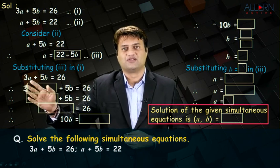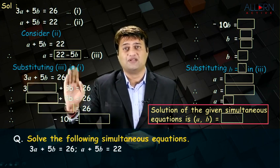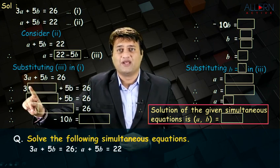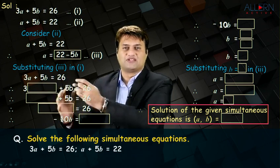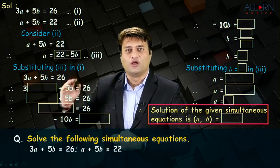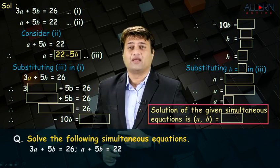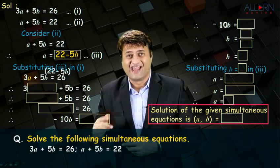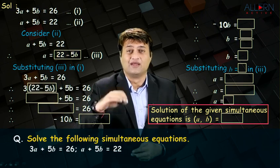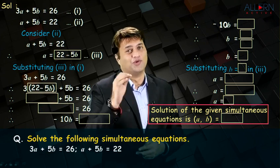This is the first equation: 3a plus 5b is equal to 26. Now, in place of a, we need to substitute its value that is 22 minus 5b. So, what do we get in this block? You get 3 bracket, in the place of a, substitute the value as you all can see. We get 3 into 22 minus 5b.